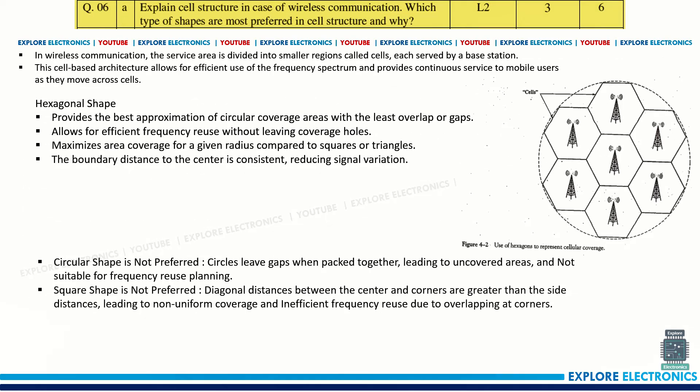Explain cell structure in wireless communication. You need to explain cell structure first, then write which different shapes exist and why square and circular shapes are not preferred. The hexagon shape is preferred because it covers each and every corner area and has advantages over square and circular shapes, as briefly explained here.